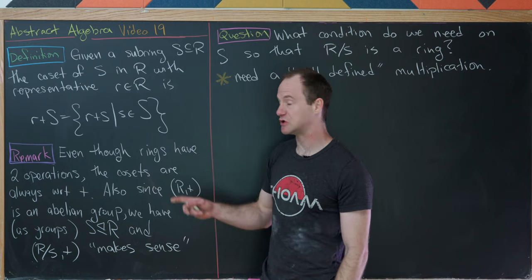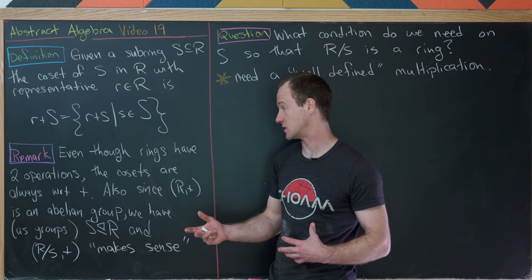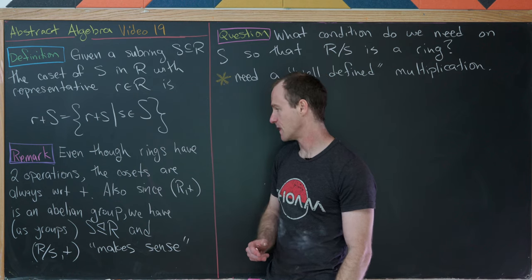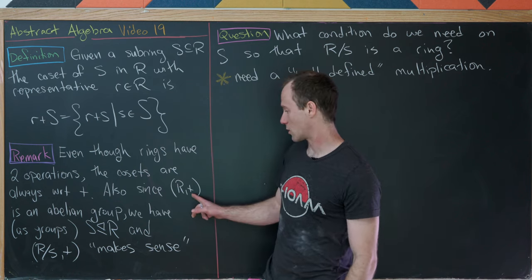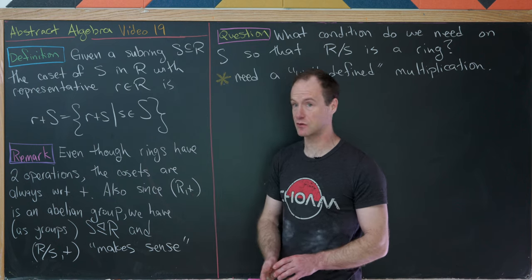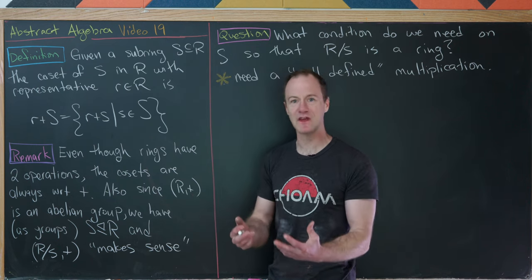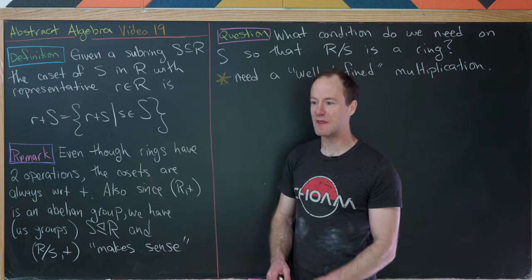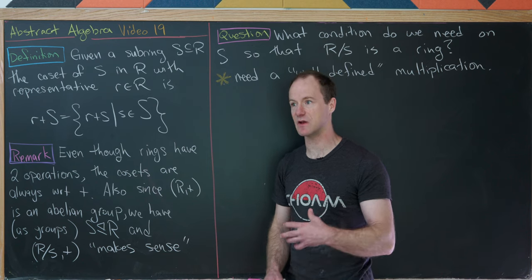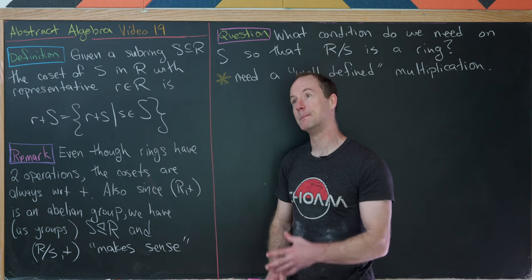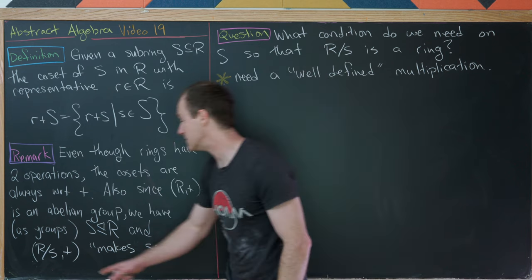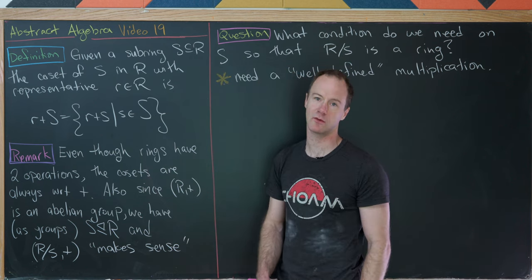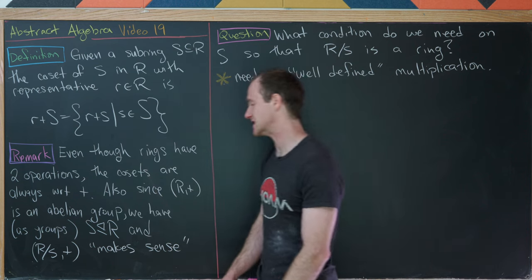Before moving on to ideals, a couple of remarks. Even though rings have two operations — addition and multiplication — cosets are always with respect to addition. Since R with addition is an abelian group, S is a normal subgroup of R (any subgroup of an abelian group is normal). So the quotient group R mod S makes sense with addition as the operation.